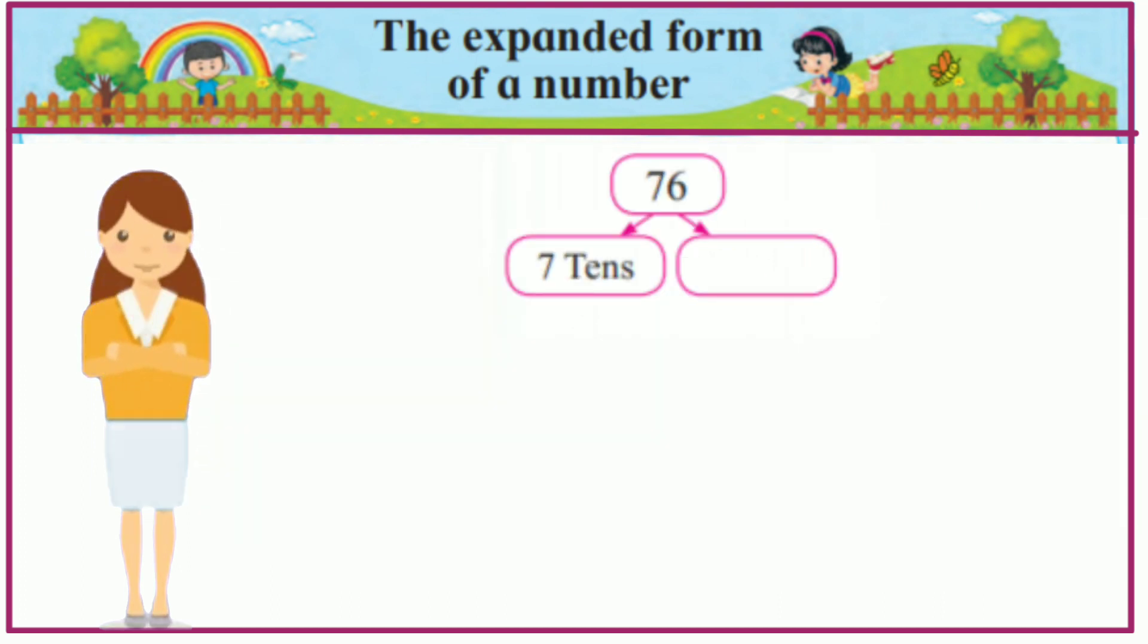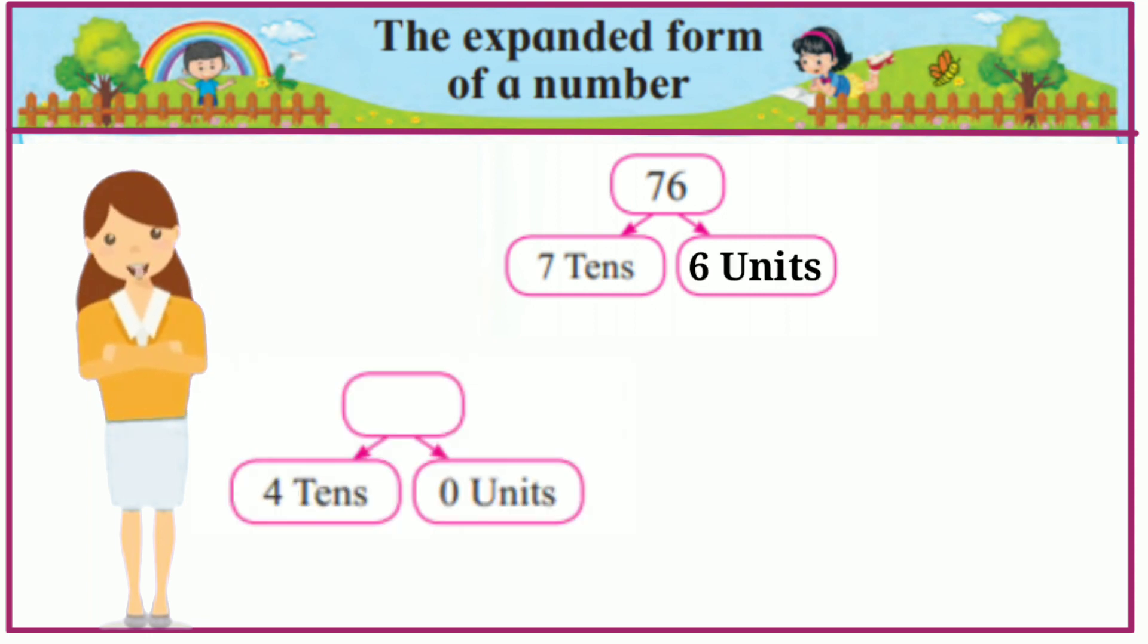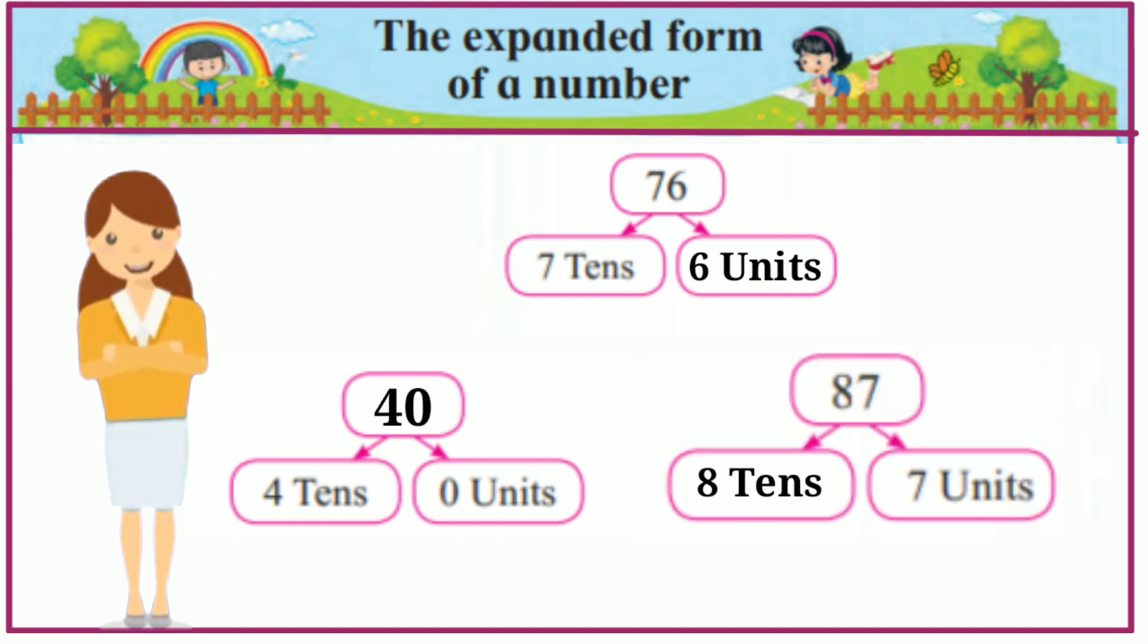76. 7 tens and 6 units. 4 tens and 0 units means 40. 87. 8 tens and 7 units.